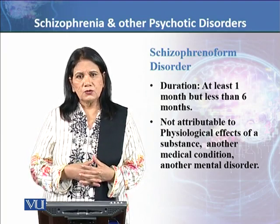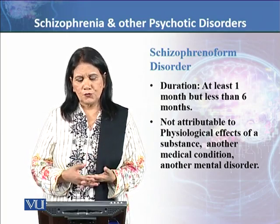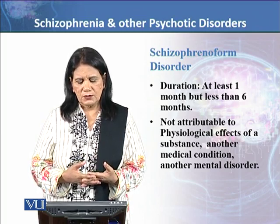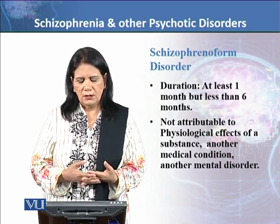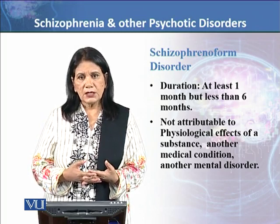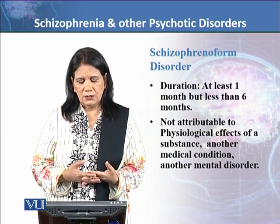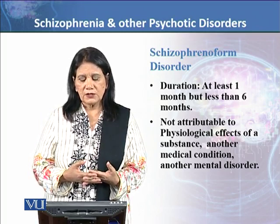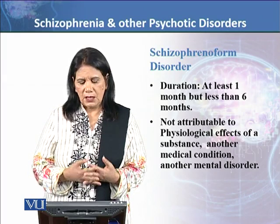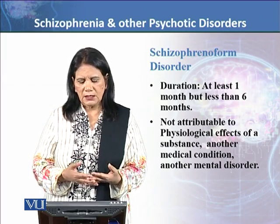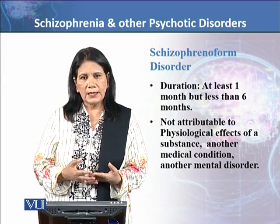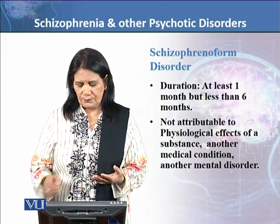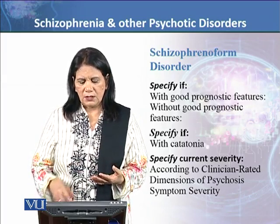If the symptoms of schizophrenia are present but duration is under 6 months, you will not diagnose schizophrenia — you diagnose schizophreniform disorder. The diagnosis is also not attributed to the physiological effect of a substance, another medical condition, or any other mental disorder. These alternative causes must be ruled out.